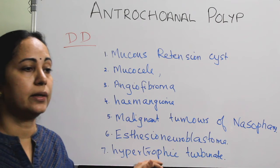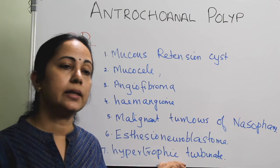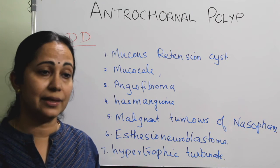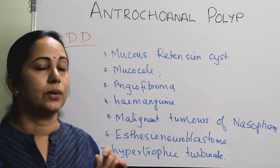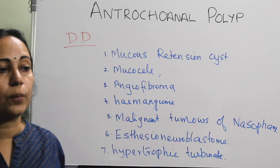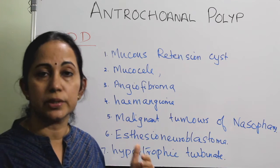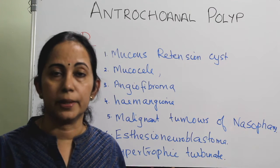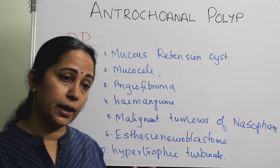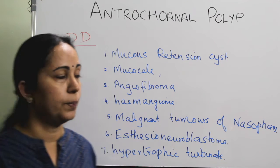Hypertrophic turbinate, usually middle turbinate, can be differentiated clinically by probing. In probing, an antrochoanal polyp has a soft consistency, whereas a hypertrophic turbinate is usually firm, so you can differentiate by probing itself.